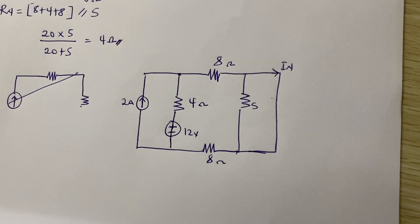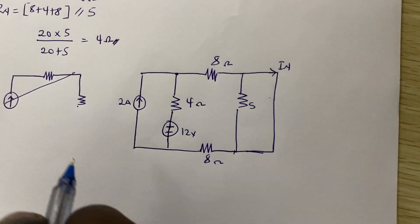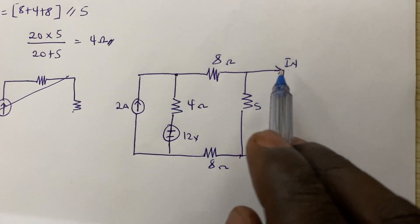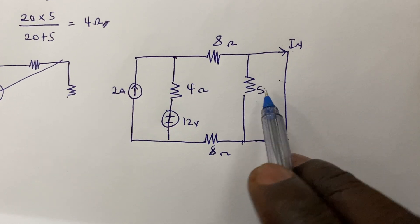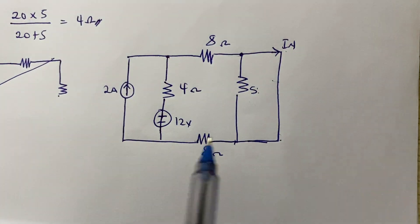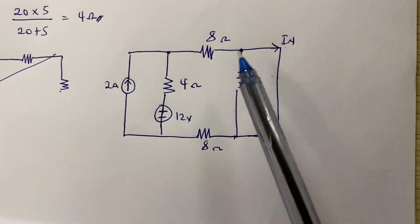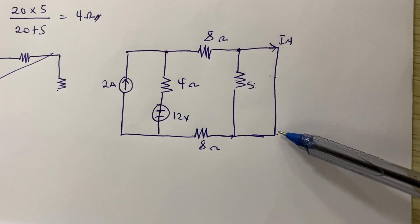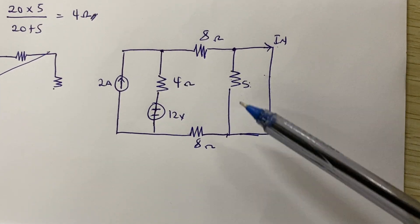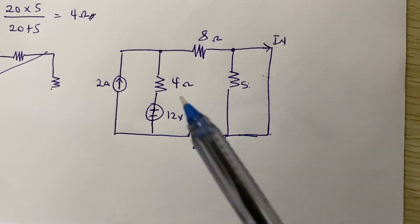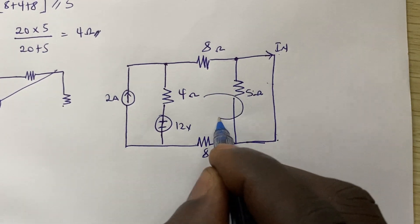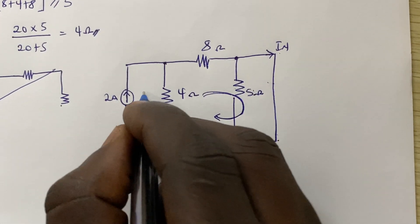We are going to use mesh analysis to solve this. We assign currents to the loops. Since we short-circuited the terminals, all current flowing through that branch will pass through the short circuit — because current always takes the easiest path — leaving the 5-ohm resistor useless. So the 5 ohms won't be part of our calculation, and we assign mesh currents without considering the 5-ohm resistor.